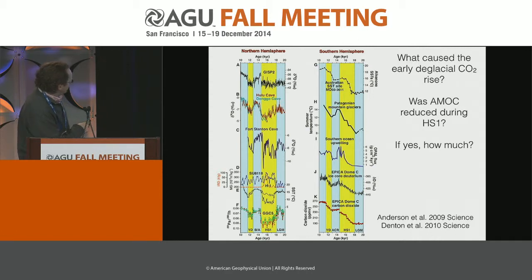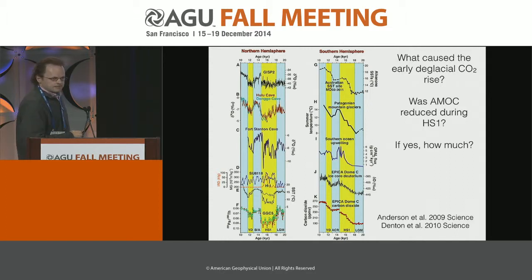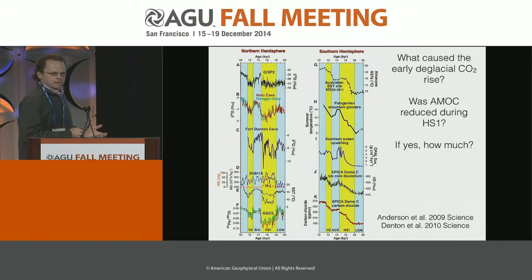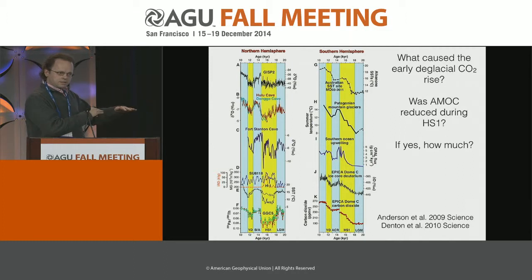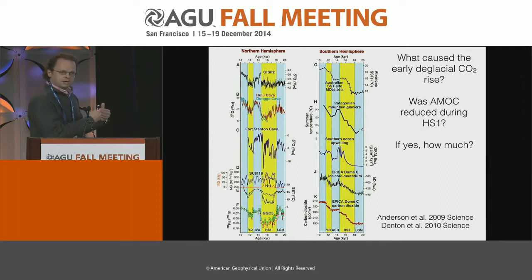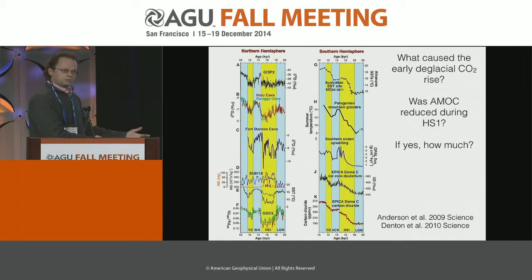There's also some evidence from the deep ocean — here's a protactinium-thorium record from McManus that is well cited — indicating that ocean circulation was reduced during Heinrich Event 1. This idea has been around for a long time. But I was always a little uneasy because there was not really high-resolution evidence from the deep ocean supporting that. There was a lot of indirect evidence from the surface, such as the bipolar seesaw — warming in the south and cooling in the north — and shifts in the ITCZ showing precipitation changes consistent with model simulations of an AMOC reduction.